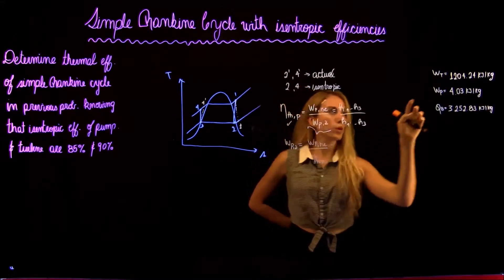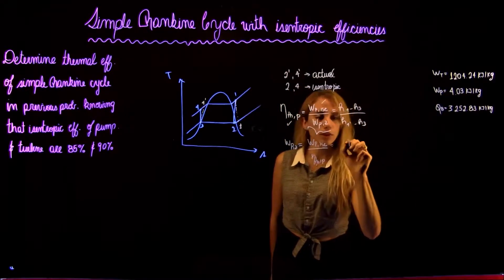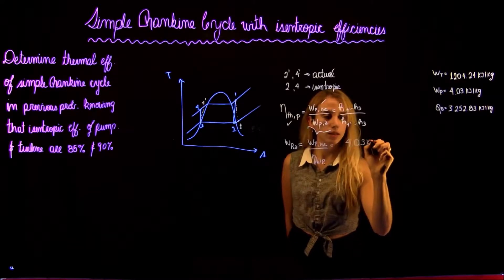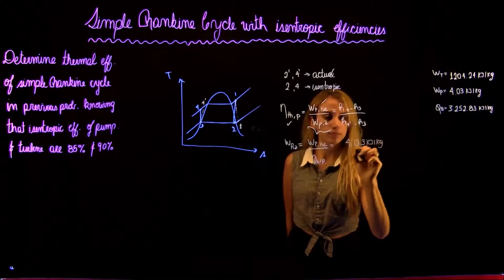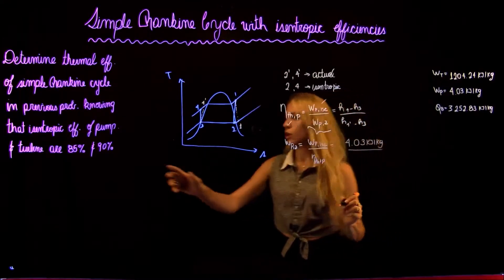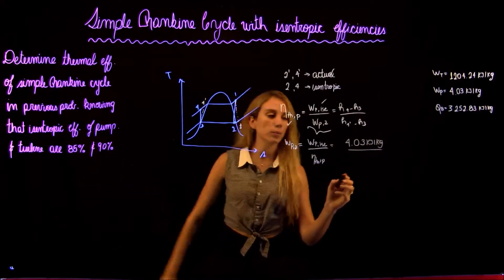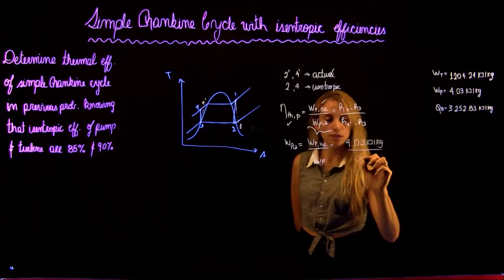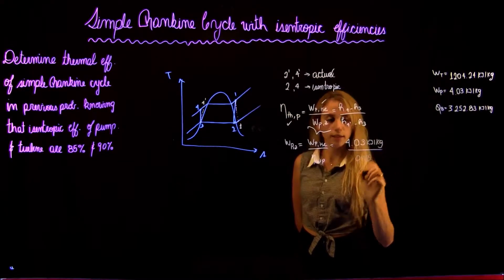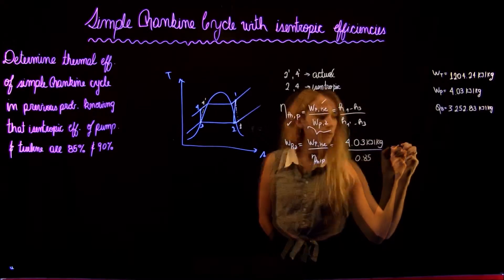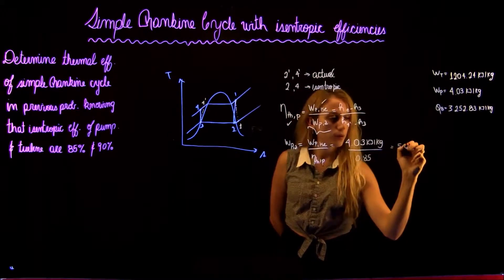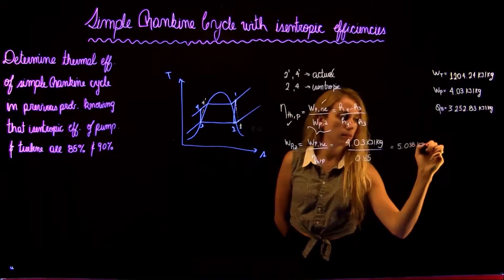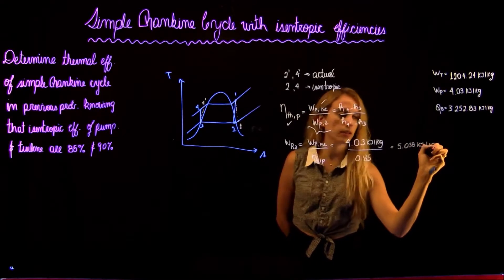The actual work of the pump will be equal to the isentropic pump work divided by the isentropic efficiency. The isentropic pump work we found previously is 4.03 kJ/kg, divided by the isentropic efficiency of the pump, which is 85% or 0.85. This gives us 5.03 kJ/kg.